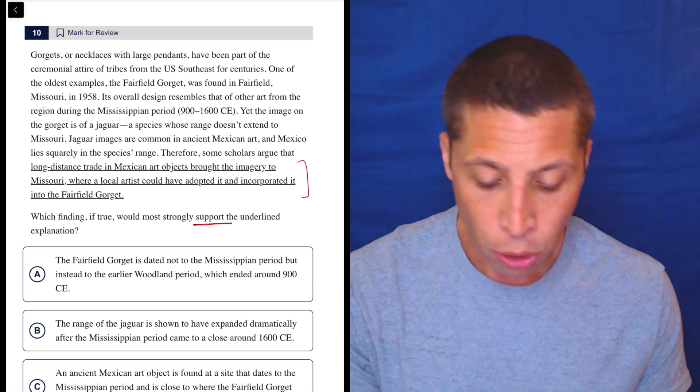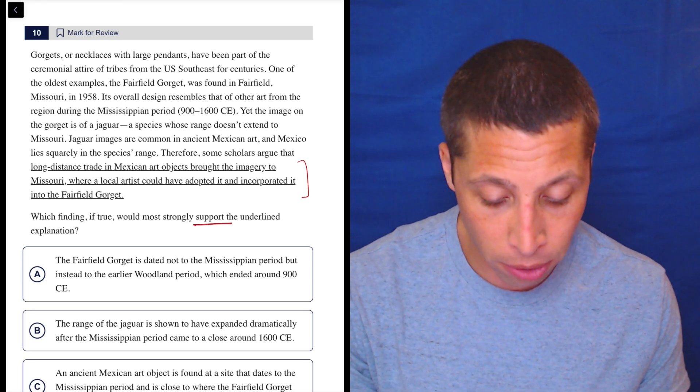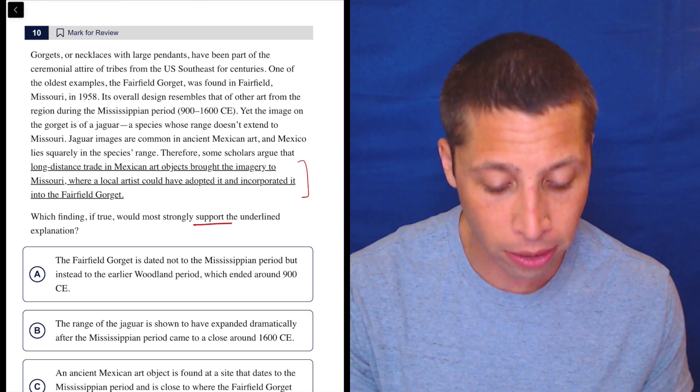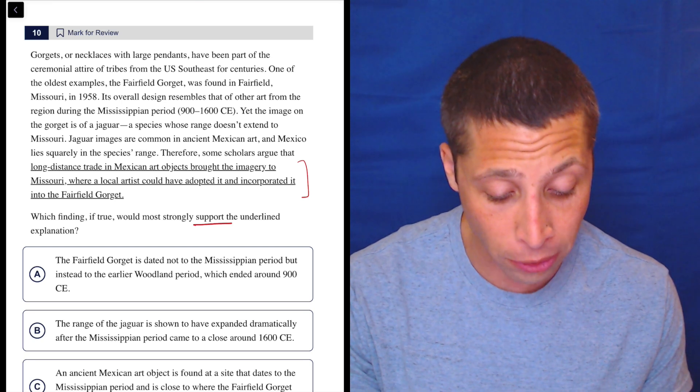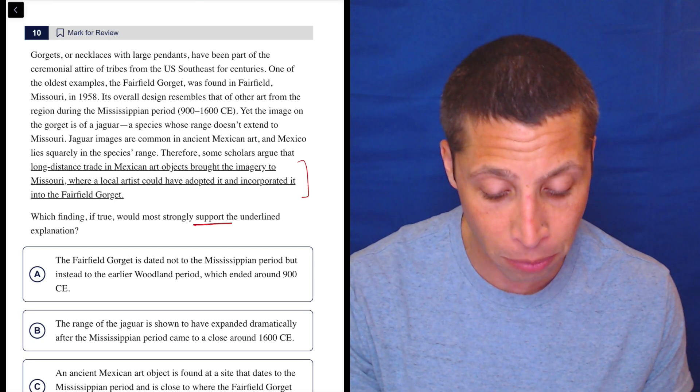So let's take a look. Gorgets, or necklaces with large pendants, have been part of the ceremonial attire of tribes from the U.S. Southeast for centuries. One of the oldest examples, the Fairfield gorget, was found in Fairfield, Missouri in 1958.